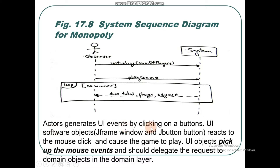Actors generate UI events by clicking on a button — they generate user interface events. User interface software objects like JFrame window and JButton react to the mouse click and cause the game to play, and the game starts.